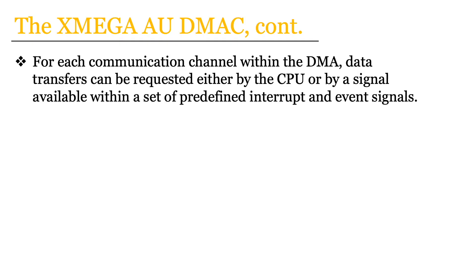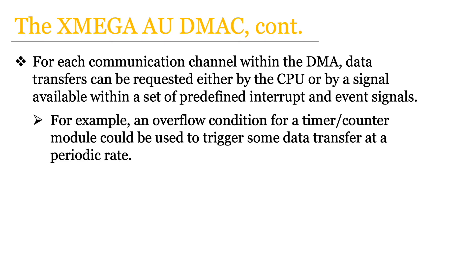Another important thing to note is that for each communication channel within the DMA, data transfers can be requested either directly by the CPU or by a signal available within a set of specific predefined interrupt and event signals. This set of predefined interrupt and event signals is well defined within the 8331 manual and cannot be altered. Unfortunately it doesn't include all of the generally available interrupt and event signals within an XMega AU microcontroller, however there are a good amount of options for triggering a DMA data transfer. For example, we could utilize an overflow condition for some timer/counter module to trigger data transfer at some periodic rate, which could be very useful for a wide variety of applications.